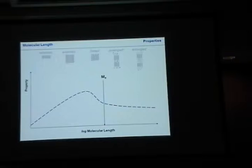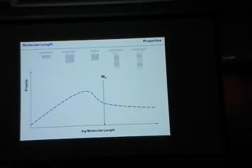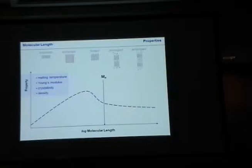There are simply two principal trends in how properties change with molecular length. First, we have a property that essentially goes linear at the beginning with the level of crystal thickness — it improves, improves. Once you have entanglement, it decreases again. That's when we have the molecular weight between entanglement. Why does it increase? Because the level of crystal thickness actually decreases again. So this is true for melting temperature.